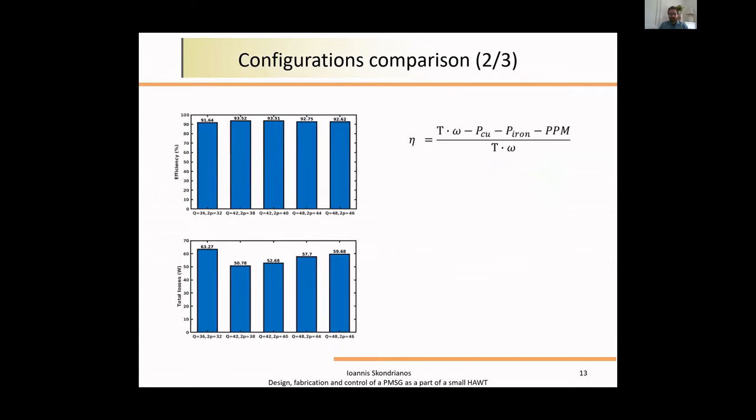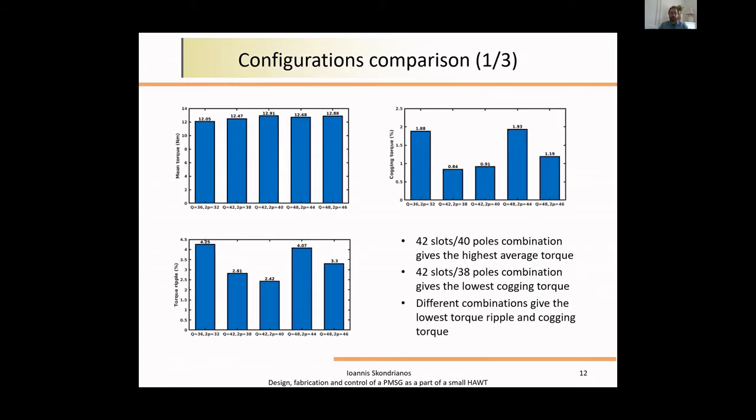In terms of total torque, more or less they give the same results. However, we can see at the top right that cogging torque is much better, much less in combinations of 42 slots 38 poles and 42 slots 40 poles. At the bottom left, the combination with 42 slots and 40 poles gives the least torque ripple. Less torque ripple means less noise while operating and better curves in terms of back EMF.